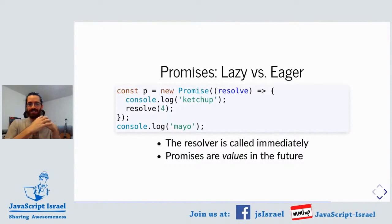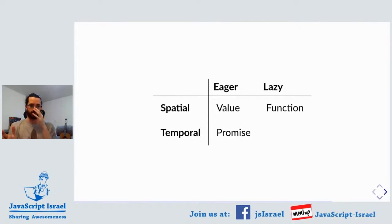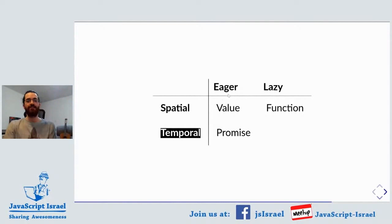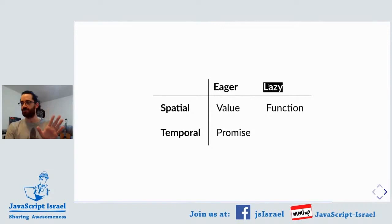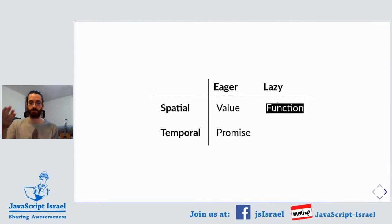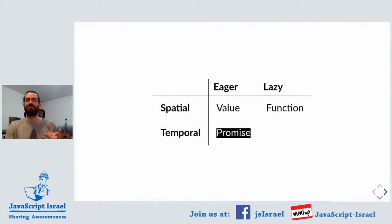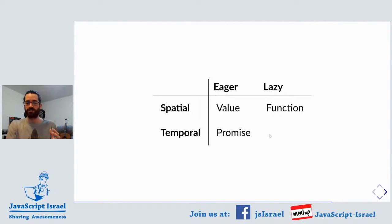Let's put this on a table, on an axis. We have things that are spatial or temporal — things of the now, present tense, and things in the future tense. And you have things that immediately try to get a value, like an object, versus things that are more chill — only used when needed. A value is something immediately computed in the present tense. A function is something lazily computed in the present tense. A promise is something eagerly produced now but where you only get the value in the future. What's in that fourth quadrant?